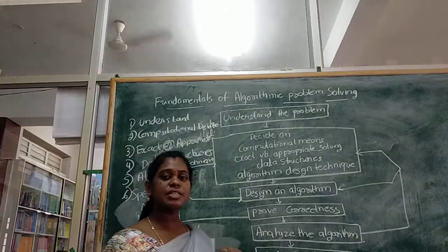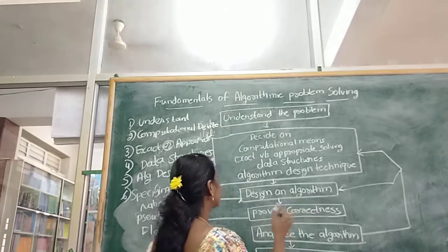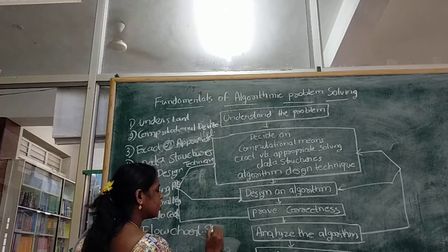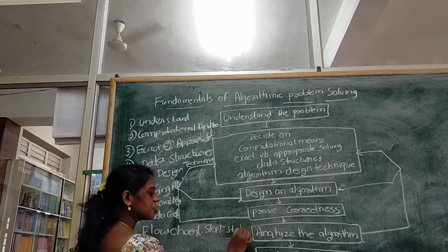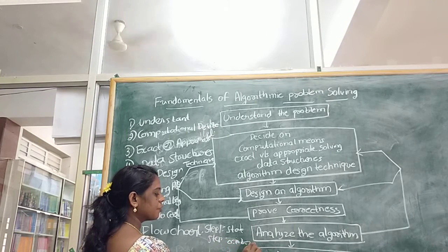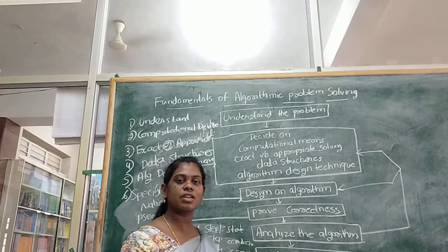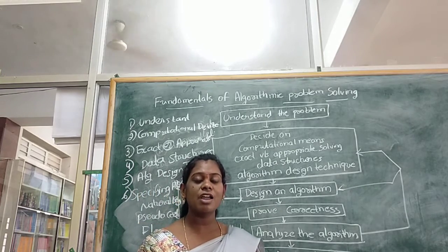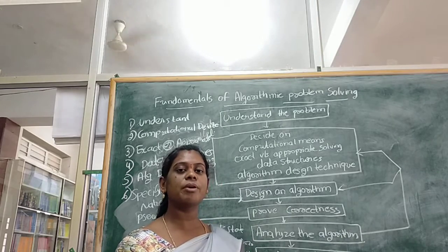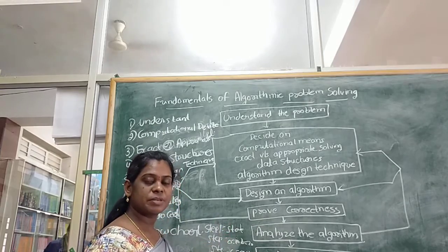Natural language means writing the steps in English. For example — Step 1: Start. Addition of numbers. Step 2: A = 10, B = 20. Step 3: C = A + B. Step 4: Print C. Step 5: Stop. That is how you represent an algorithm in natural language — using English to write the steps.